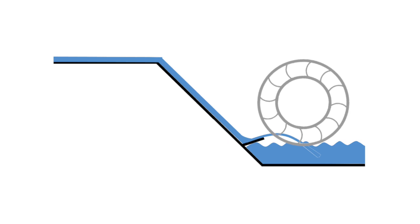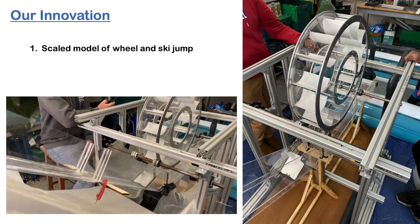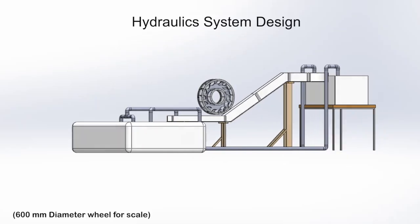This is an innovative solution to the problem. Our innovations come in four parts. Firstly, we created a scaled model of the design of the ski jump and water wheel to gather performance data and to test the functionality of the design.